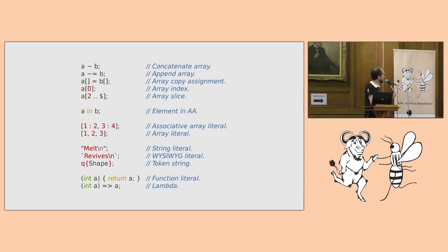All strings in D are dynamic arrays under the hood. And we also have function literals that come in two different syntaxes. The latter being just more of a convenience if you're only returning one expression.